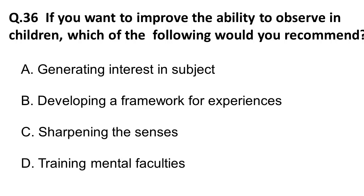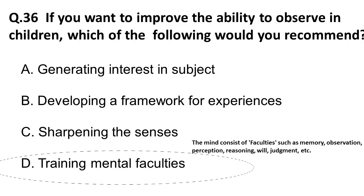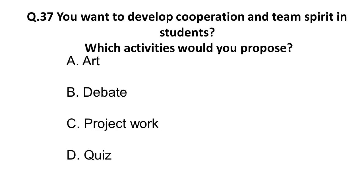Question: To improve observation ability in students, which would you recommend? Options include generating interest in the subject, developing a framework for experience, sharpening the senses, and training mental faculties. The correct answer is training mental faculties. Mental faculties include memory, observation, perception, reasoning, will, and judgment — training all of these increases observation ability in children.